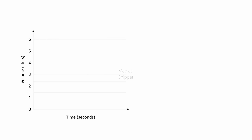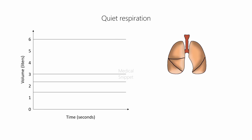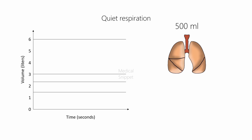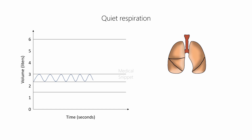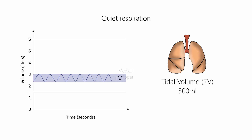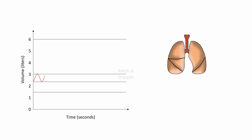First we will see what happens during quiet respiration. A normal person inhales 500 ml of air during inspiration and exhales 500 ml during expiration. The air which is inspired during quiet respiration is called the tidal volume, which is equal to 500 ml.